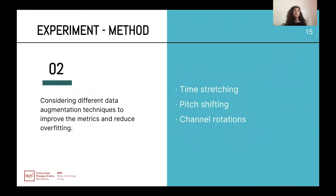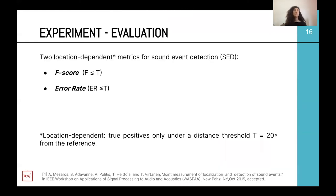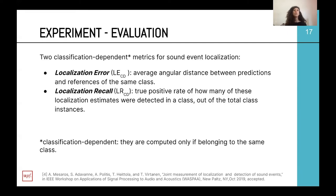In the second part of the experiment, we consider different data augmentation techniques to improve the metrics and reduce overfitting, concentrating on time stretching, pitch shifting, and channel rotation. To evaluate the system, we use the same evaluation metrics proposed for the challenge: two location-dependent metrics for the sound event detection task — the F-score and error rate — and two classification-dependent metrics for the sound event localization task, which are the localization error and the localization recall.